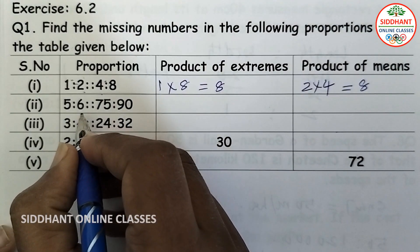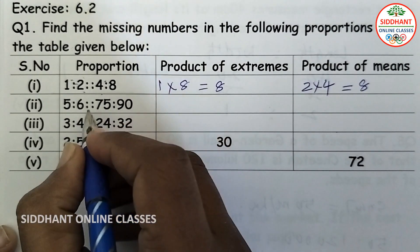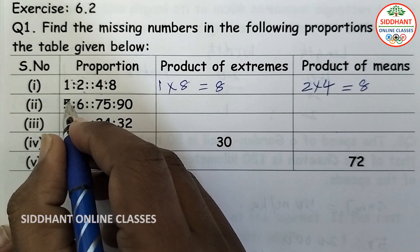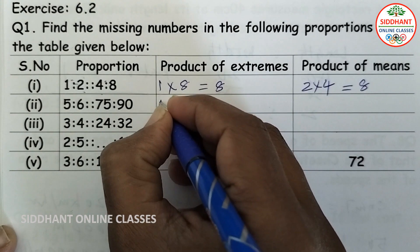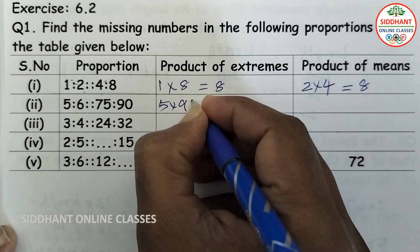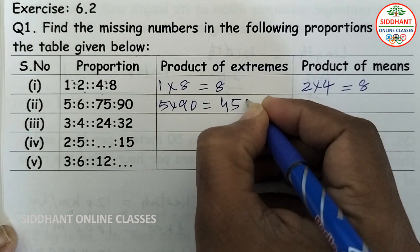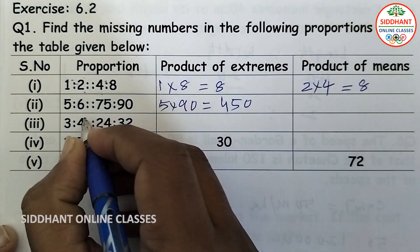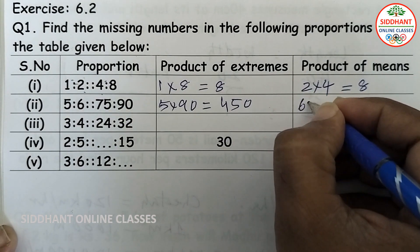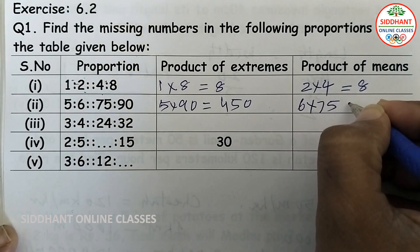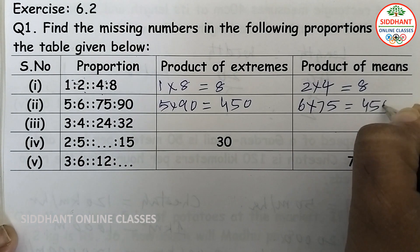Second proportion: 5 is to 6 and 75 is to 90. Product of extremes: 5 into 90 equals 450. Product of means: 6 into 75 also equals 450.